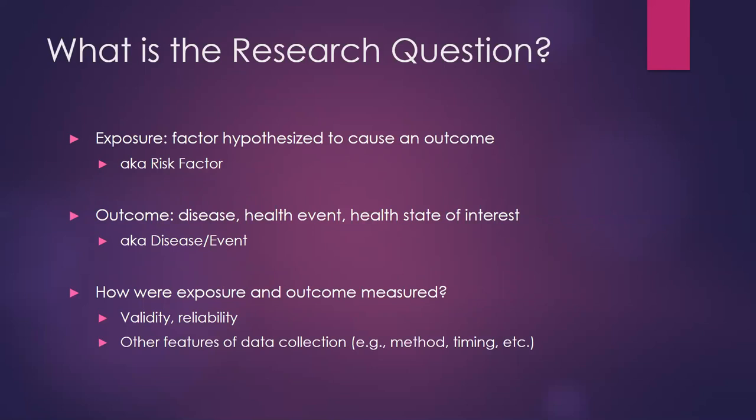The exposure is kind of the independent variable in our analysis, and the outcome is the dependent variable — the disease, the health outcome, the state of interest. Identifying what the exposure and outcome are enables you to determine what kind of study it is. For timing: a single time point means it's a cross-sectional study, but if it was done over time you have to decide whether it was a cohort or case-control study. I'm assuming in all these examples that we're looking at an observational study, not an experimental one.